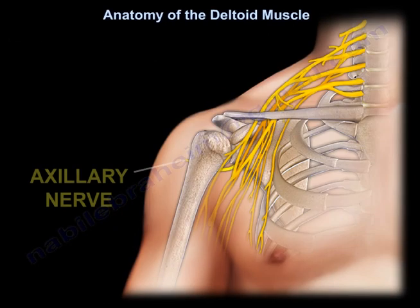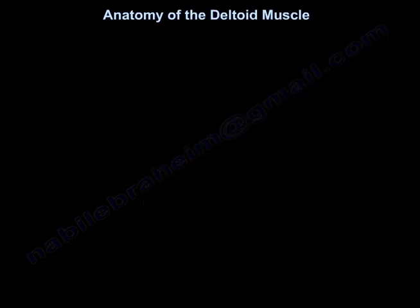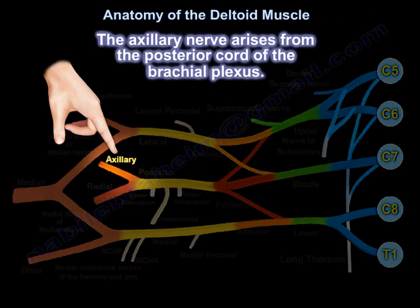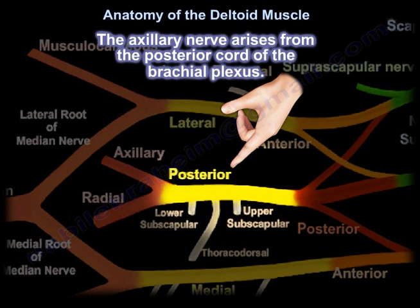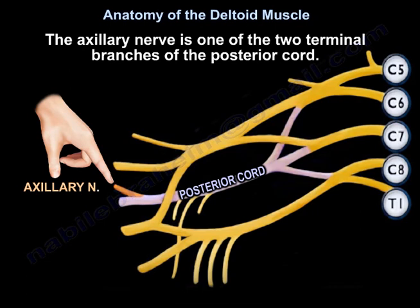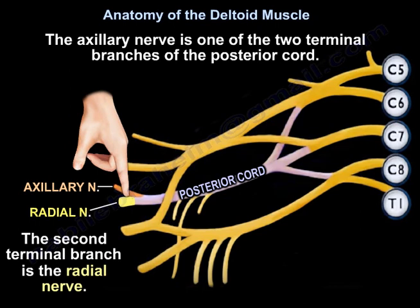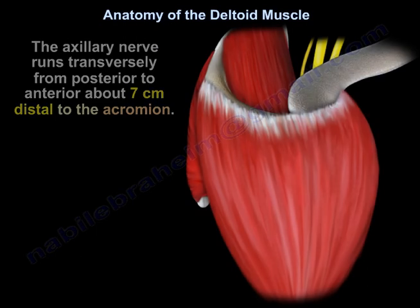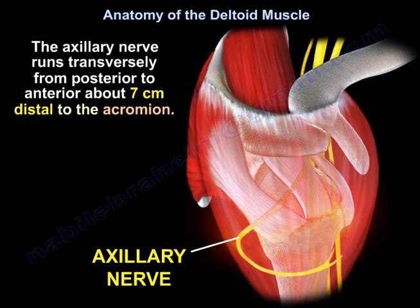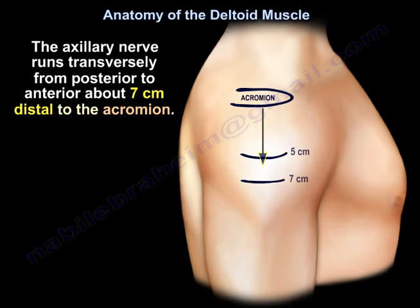The axillary nerve supplies the deltoid muscle and gives sensation over the shoulder area. The axillary nerve arises from the posterior cord of the brachial plexus and is one of the two terminal branches of the posterior cord. The second terminal branch is the radial nerve. The axillary nerve runs transversely from posterior to anterior about seven centimeters distal to the acromion.